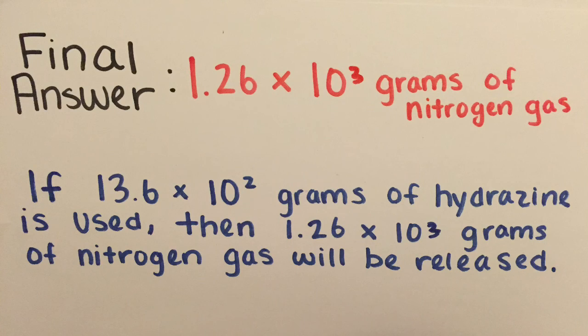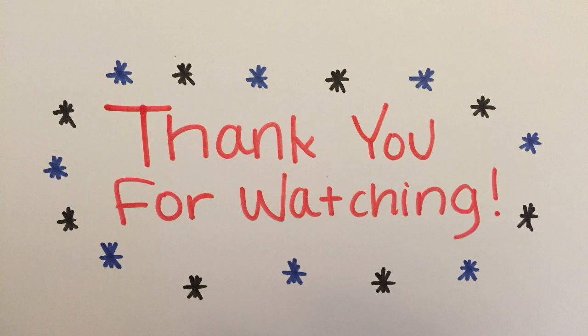If 13.6 times 10 to the second power grams of N2H2 is used, then 1.26 times 10 to the third power grams of N2 will be released. I hope this video helped you learn more about mass-to-mass conversions. Thank you for watching.